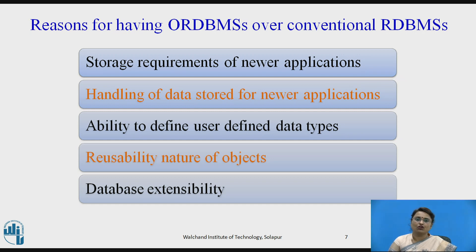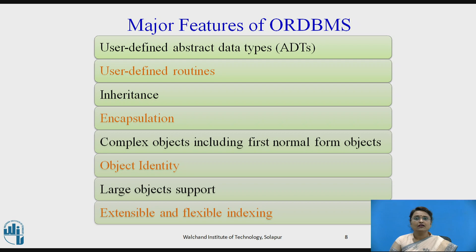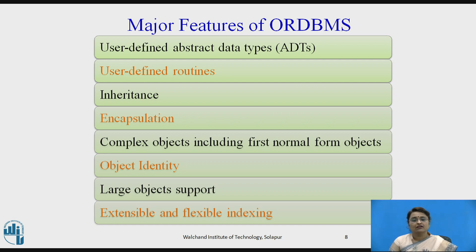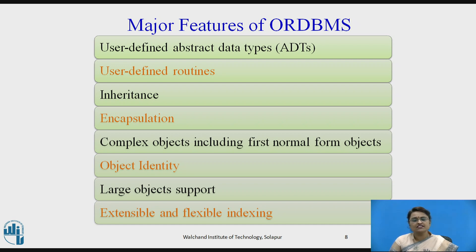These are the reasons for having ORDBMS. Its features include: user-defined abstract data types, user-defined routines (functions), inheritance, encapsulation, and complex objects. Object identity allows pointing one object pointer to another within tables. Large objects can be defined — images, videos, and similar content can be stored. It is also extensible and flexible for indexing. These are the main features of ORDBMS.